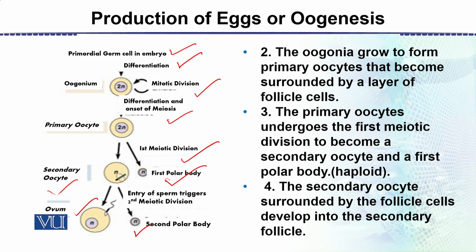The primary oocyte undergoes the first meiotic division to become a secondary oocyte and a first polar body, both of which are haploid. The secondary oocyte is then surrounded by follicle cells and develops into the secondary follicle.